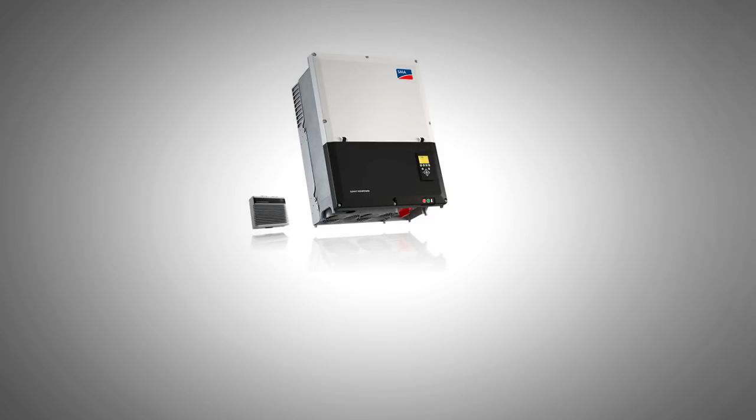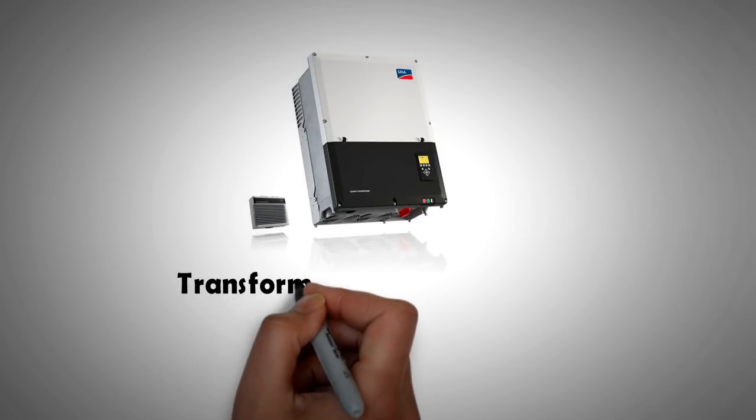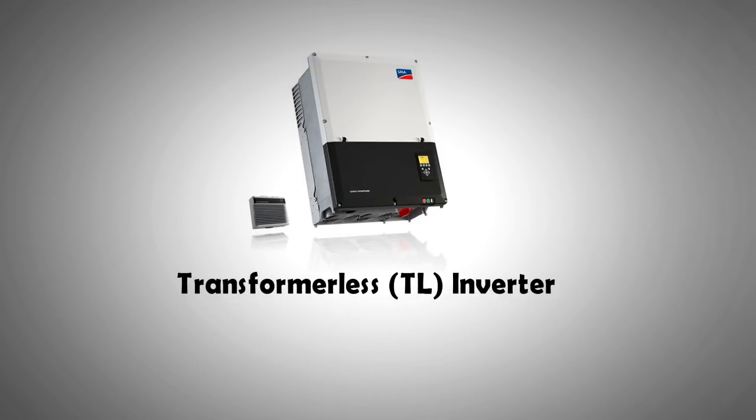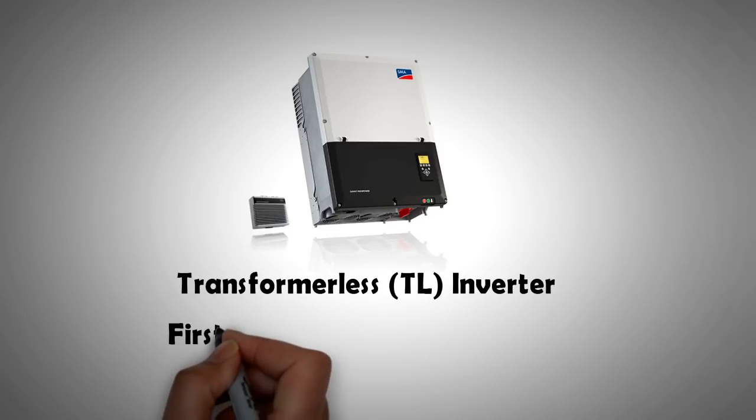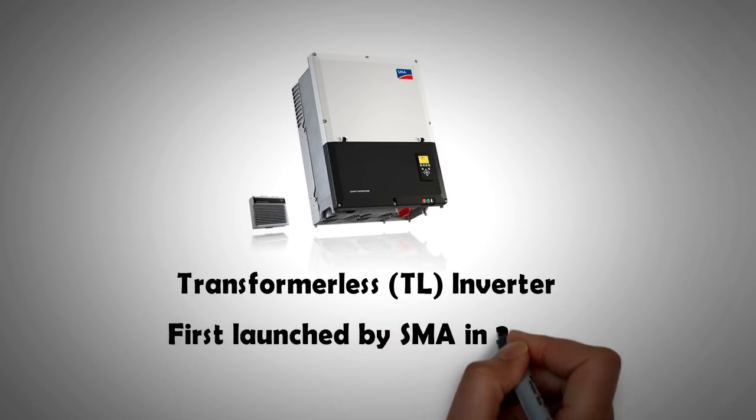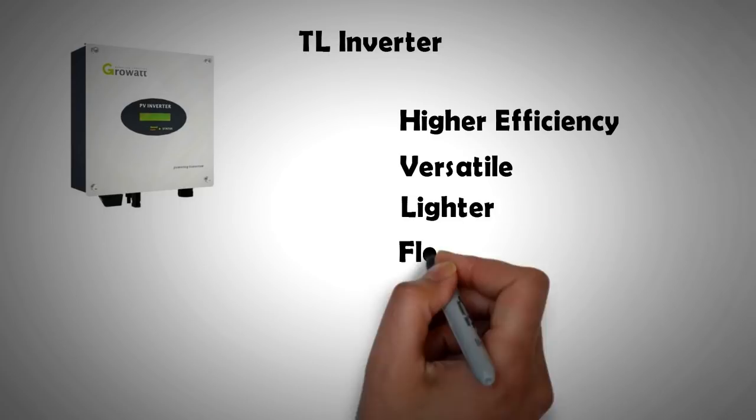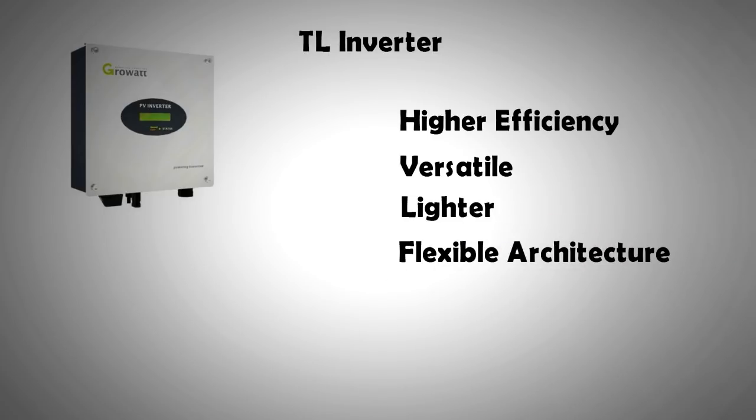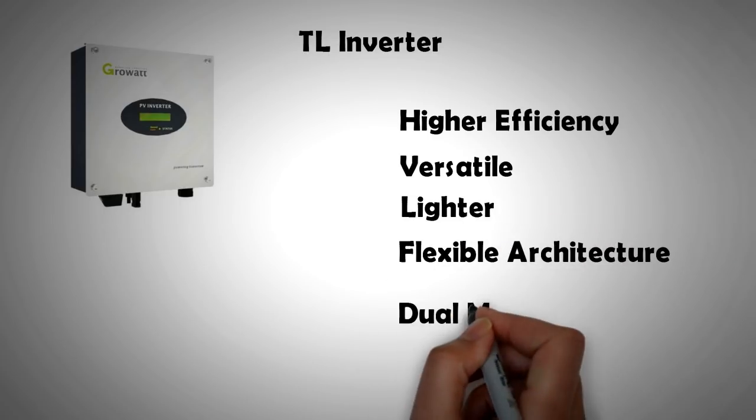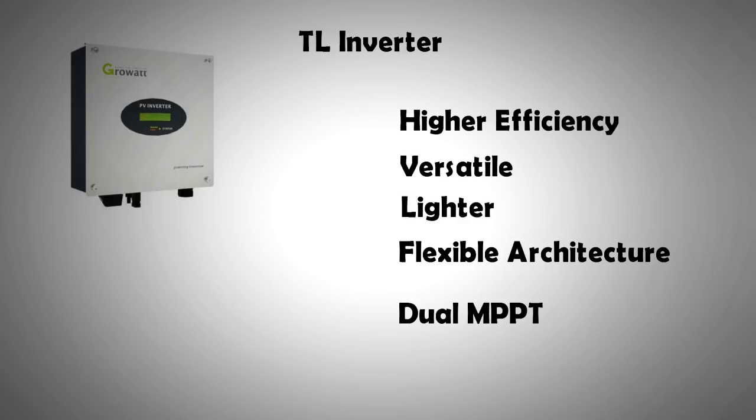In the year 2010, SMA released their first transformer-less inverter for residential installations. The abbreviation TL was used to classify them. Because of their versatility, they were widely adopted by the solar industry in a small amount of time. They had superior efficiency and could be used with power tools and pumps and were lighter.